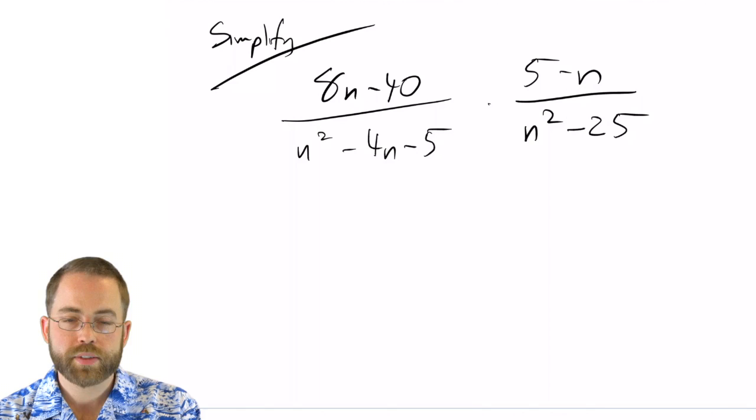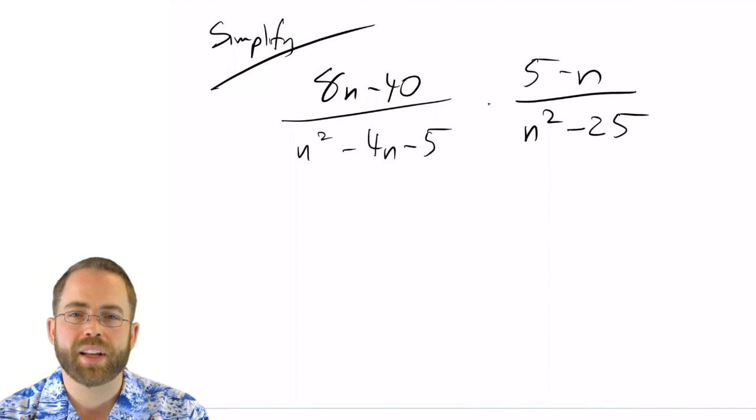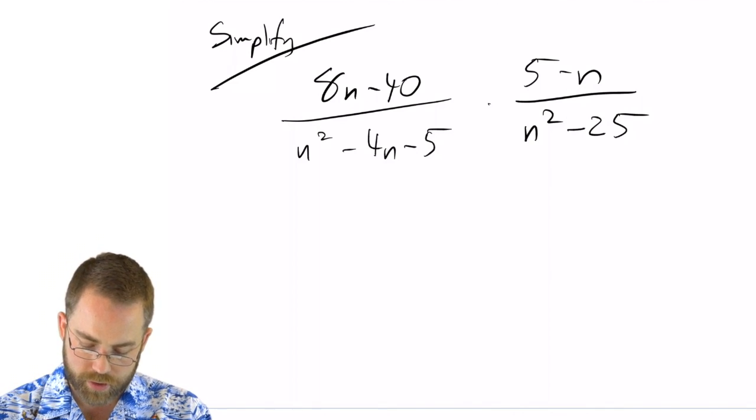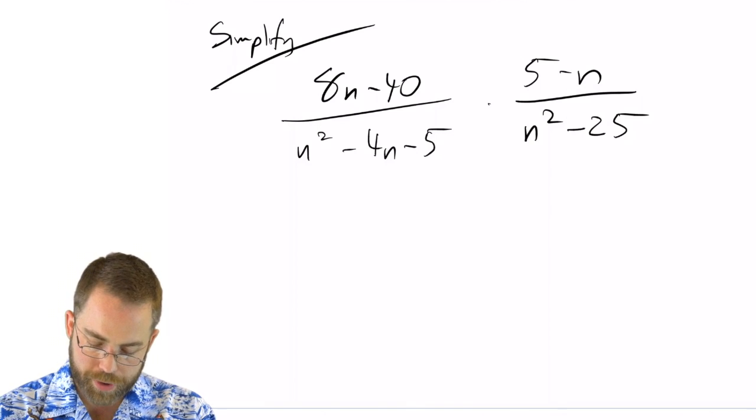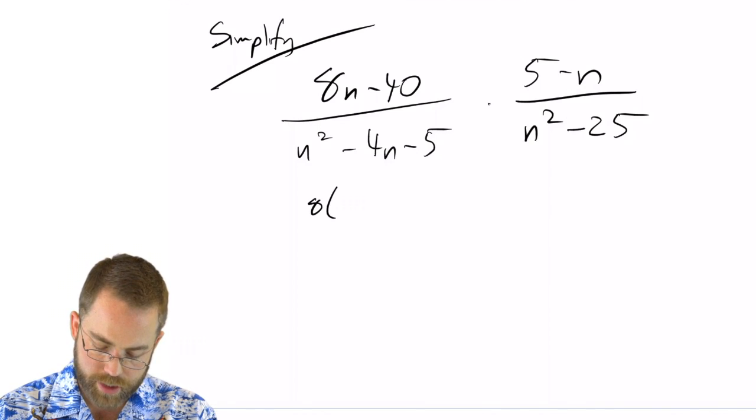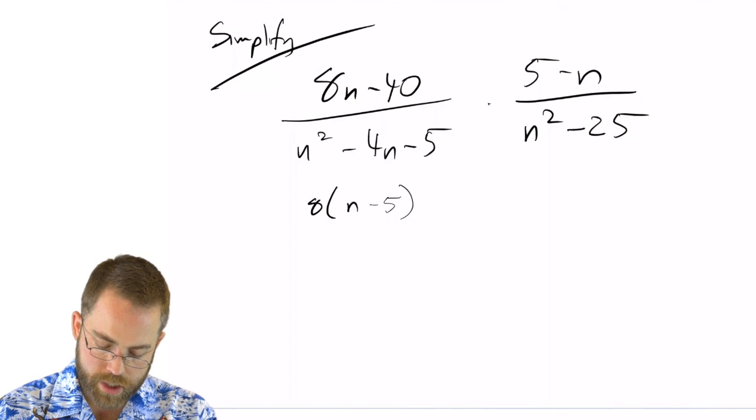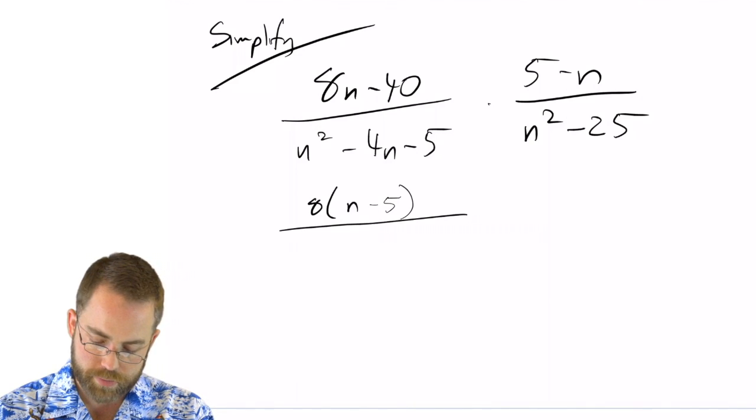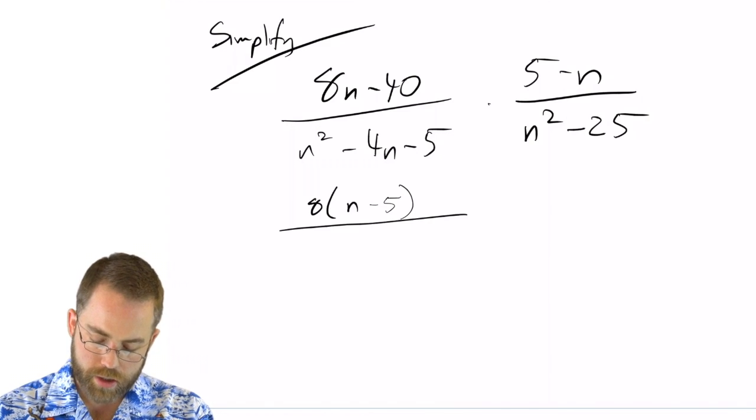All right. Now, since this is a multiplication problem, nothing's going to be obvious until I factor. So up here, if I take out an 8, that's n minus 5, and then here, my n looks like a u—that's terrible handwriting. Here, what multiplies to negative 5 and adds to negative 4? Well, that's minus 5 and plus 1.